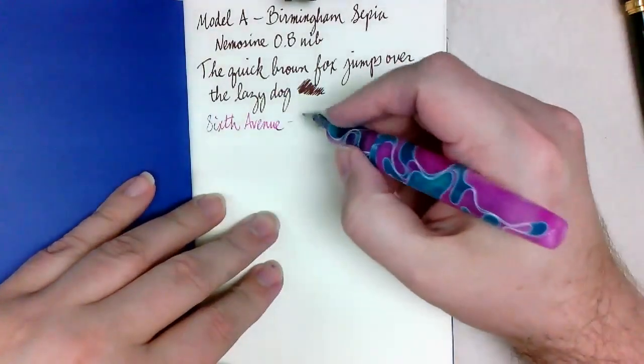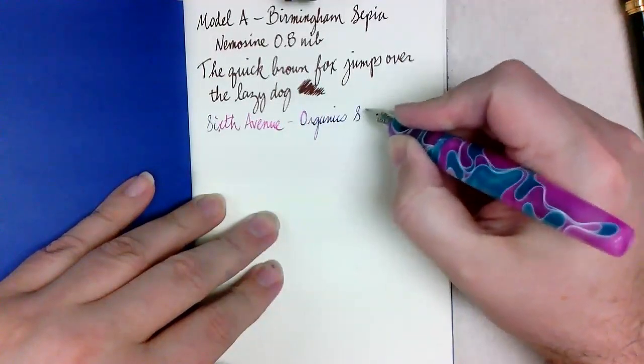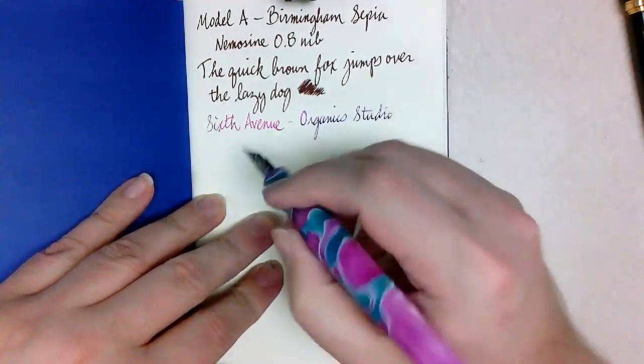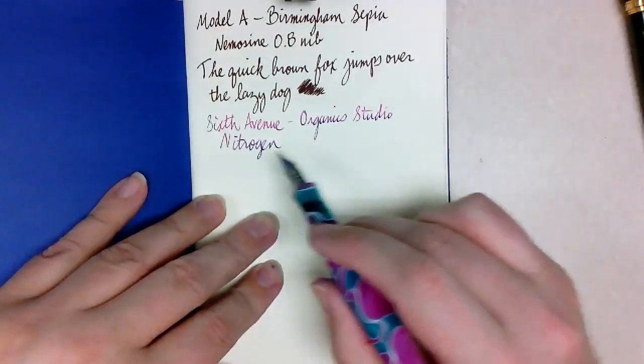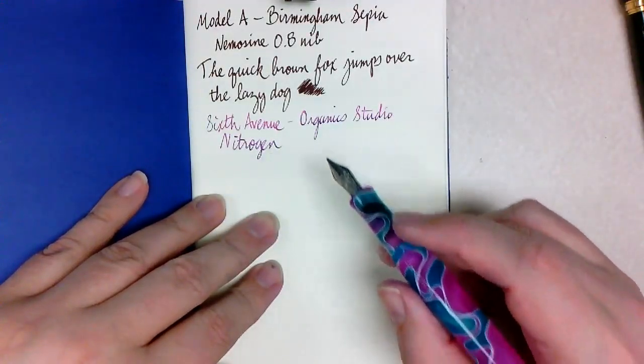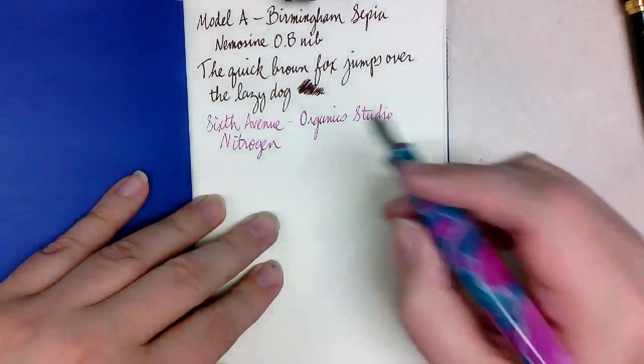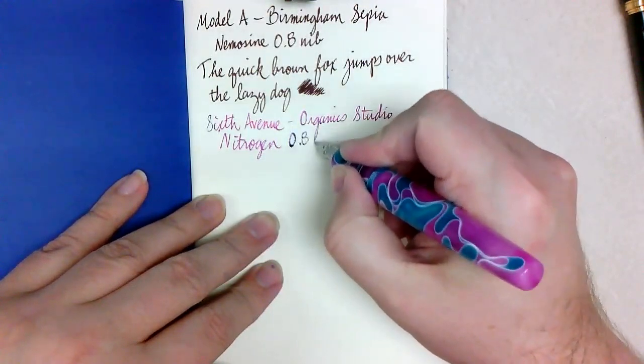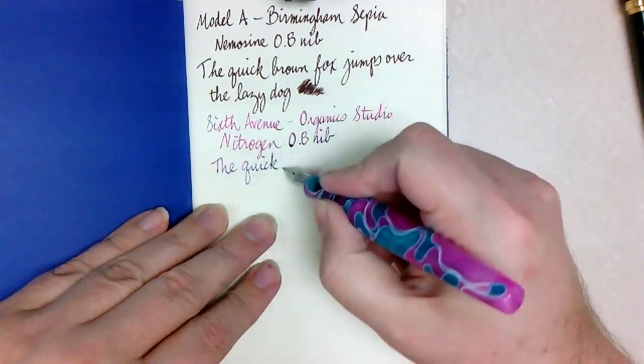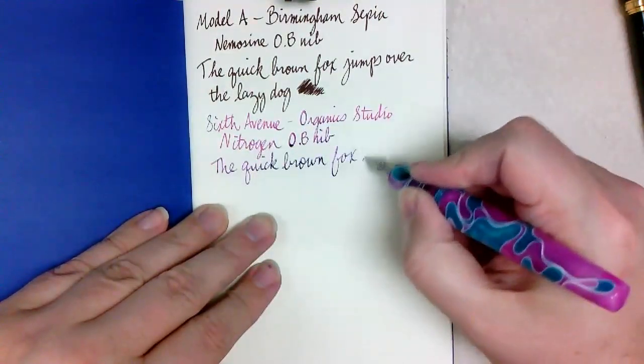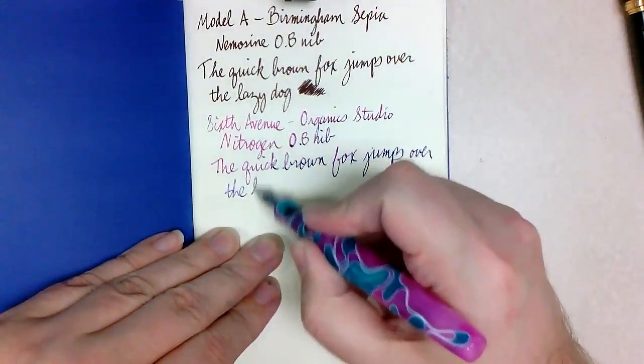And as you might be able to tell from what you're seeing on camera, this doesn't flow as well as I would like necessarily. I have not written with this for a couple of days, so there's a hard start there. This is Organic Studio Nitrogen. So that blue with the red sheen that you're getting, that looks nice. And again, I think this is a 0.8. Yeah, but definitely looks, maybe this is 0.6, but I'm pretty sure it's a 0.8.